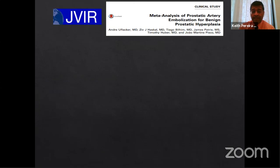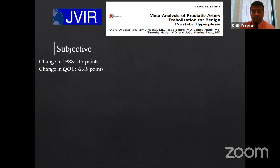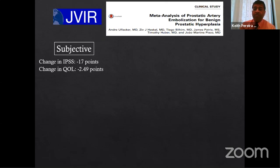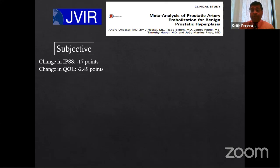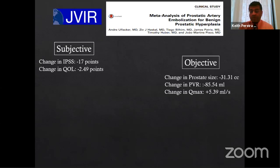A key paper is a JVIR meta-analysis published in 2016. In terms of subjective symptoms — what the patient feels — the IPSS (International Prostate Symptom Score) is a score out of 35. It improves by 17 points; a patient who comes in with an IPSS of 25 comes down to about 8. Quality of life improves by 2.45 points. Objectively, prostate size decreases by 31 grams, post-void residue improves by 85 ml, and Qmax (maximum flow rate) also improves — all highly statistically significant.